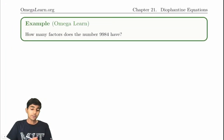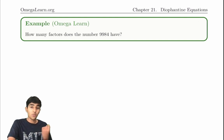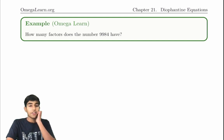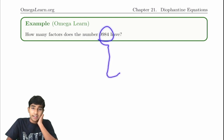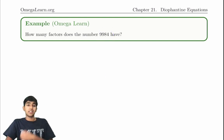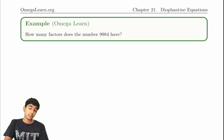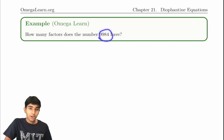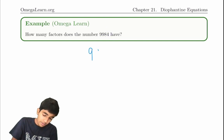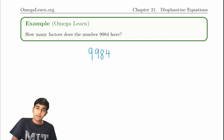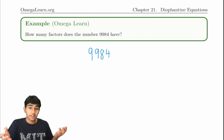How many factors does the number 9984 have? If you remember from the factors video, we learned a trick for calculating this with prime factorization. But this is a big number and finding its prime factorization directly would be very difficult. So there's a cool trick we can use. Notice anything about 9984 — whenever you're stuck, just try to make observations and look for patterns.